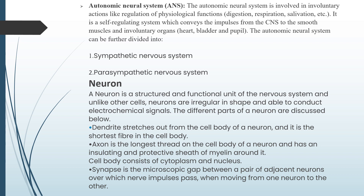A neuron is a structural and functional unit of the nervous system and, unlike other cells, neurons are irregular in shape and able to conduct electrochemical signals. The different parts of neurons are discussed below. Dendrite stretches out from the cell body of the neuron and it is the shortest fiber in the cell body. Axon is the longest thread on the cell body of the neuron and has an insulating and protective sheath of myelin around it. Cell body consists of cytoplasm and nucleus. Synapse is the microscopic gap between a pair of adjacent neurons over which nerve impulse passes when moving from one neuron to the other.